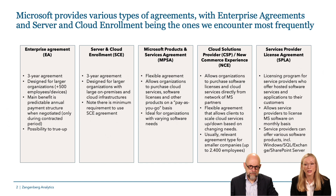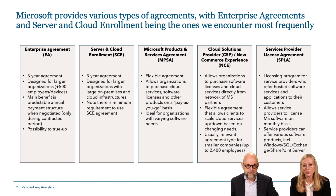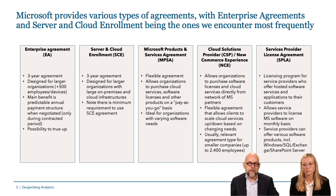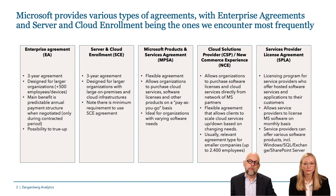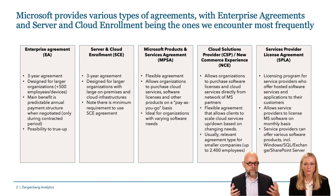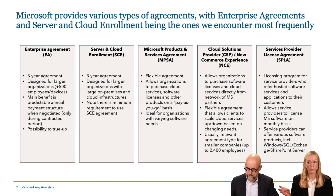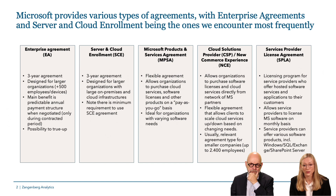The top five agreements Microsoft offers are the EA, SCE, MPSA, CSP, and SPLA, where EA and SCE are the ones we see most, typically for medium to larger clients. The SPLA is only relevant for those who resell software services including Microsoft. The other agreement types tend to move toward list price, whereas with EA and SCE it's more optimal to negotiate your prices.